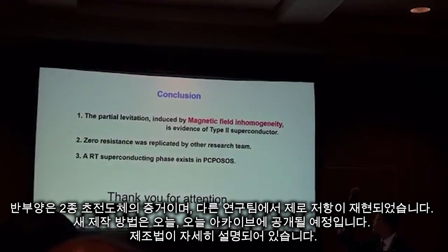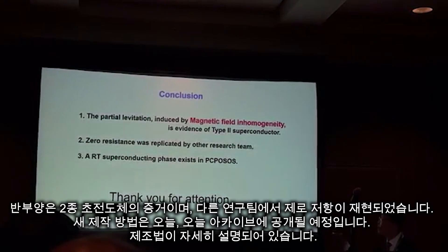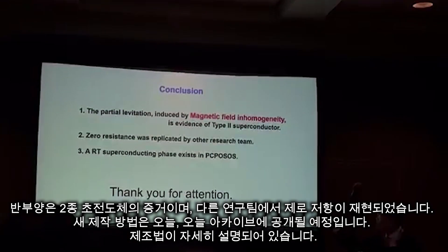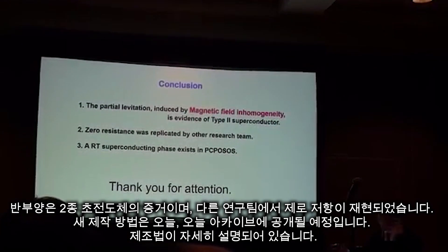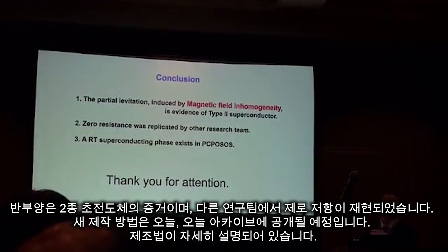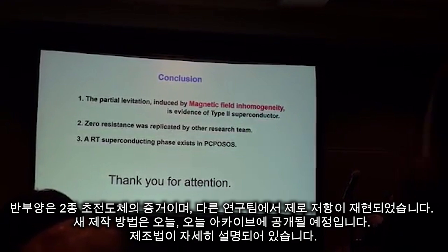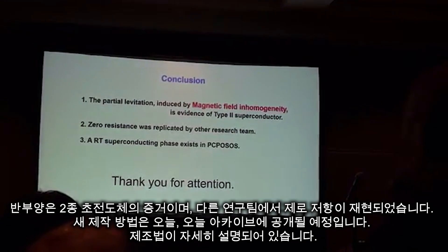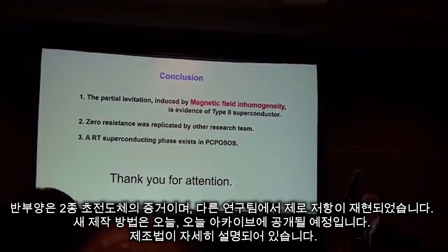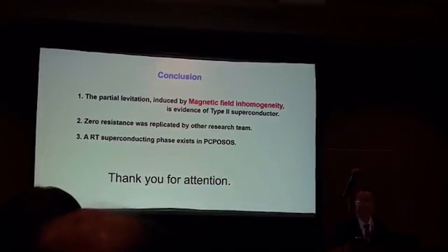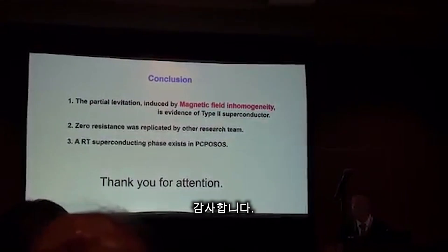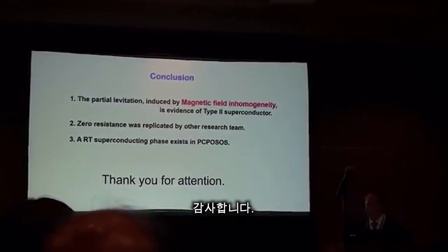The final explanation is evidence of type 2 superconductor. Zero resistance has been presented by other research. New fabrication methods will be announced today. There is a fabrication method in detail. The evidence of the superconducting state — thank you so much.